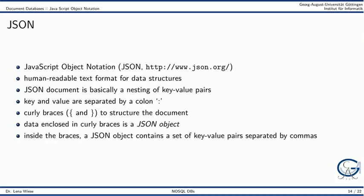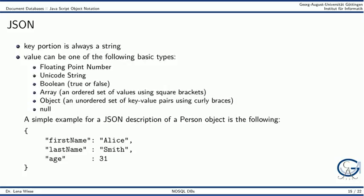The major format supported by document databases is the JavaScript object notation. It is a human readable text format for data structures. A JSON document is basically a nesting of key value pairs. The key and the value part are separated by a colon. Curly braces are used to structure the document and we call data enclosed in such curly braces a JSON object. Inside the braces a JSON object contains a set of key value pairs where the individual key value pairs are separated by commas. In JSON the key part is always a string, but the value part can be of different basic data types. Allowed data types in JSON are numbers, strings, booleans, arrays, nested objects or a null value.